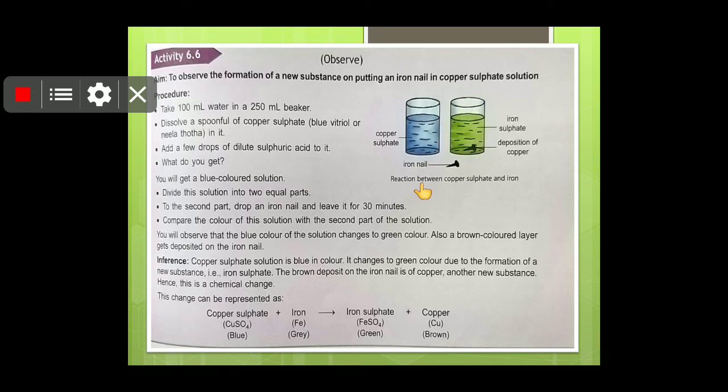Now students, one activity is there. The objective is to observe the formation of a new substance on putting an iron nail in copper sulfate solution. So what we are going to do, we will take a 250 ml beaker, we will add 100 ml of water in it, dissolve a spoonful of copper sulfate, or alternately we can call it blue vitriol or neela thotha. And then what we will do, add a few drops of dilute sulfuric acid to it.